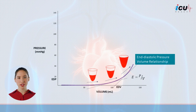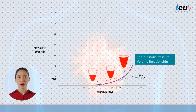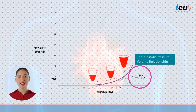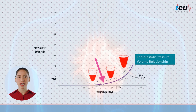The EDPVR curve gives more information on the elasticity of the left ventricle, which is defined as the left ventricle's ability to change its pressure in response to changes in volume, and it is calculated as the ratio of pressure to volume. Elastance equals pressure divided by volume. As the ventricle fills with blood, elastance is low, reflecting high compliance and minimal pressure increase, despite a significant volume increase.